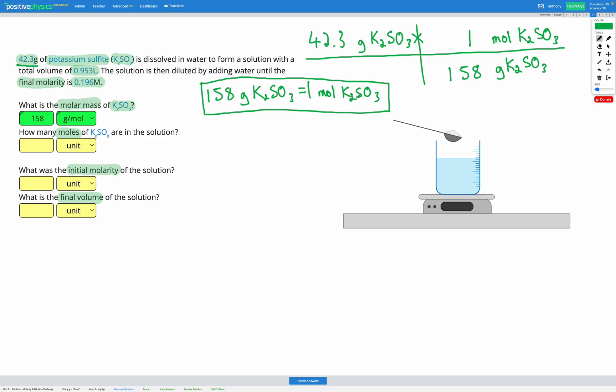We multiply everything on the top, divide by everything on the bottom. Units that are the same on top and bottom cancel. Grams K2SO3 cancels with grams K2SO3. We're left with 42.3 multiplied by 1 mole K2SO3 divided by 158. If we put that in our calculator, we get 0.267 moles of K2SO3. Let's fill that in: 0.267 moles. Correct, awesome. Our first step was finding molar mass using our periodic table. Our second step was converting grams into moles for potassium sulfite using that molar mass.